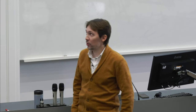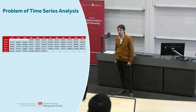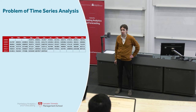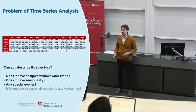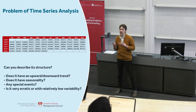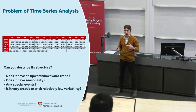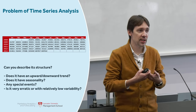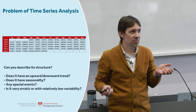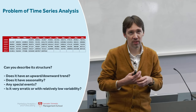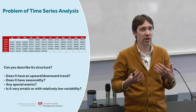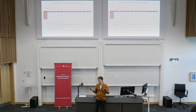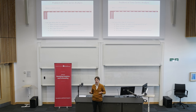Here is a table containing a time series. In the rows you can see years, in the columns you see months, and inside the table you can see numbers representing sales of our product. The question I have for you is: can you describe its structure? Can you tell me if this data has a trend — going up or down? Does it have seasonality? Are there any special events? What is the variability in the series? When I ask all these questions, you probably face a difficult situation, because these are just numbers and it is very difficult to understand the structure when you just look at numbers.